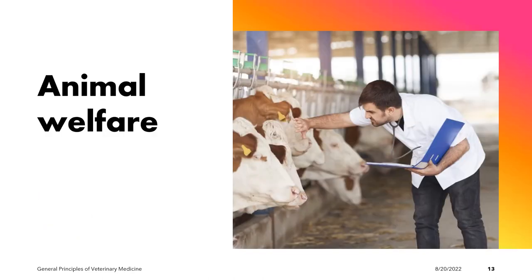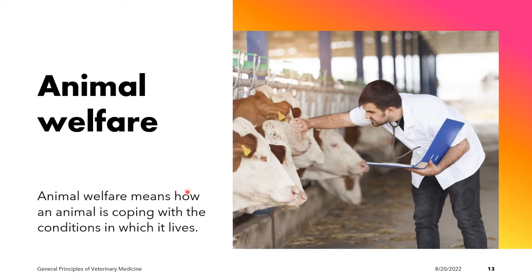The next objective of food producing animal practice is animal welfare. According to the American Veterinary Medical Association, animal welfare means how an animal is coping with the conditions in which it lives. An animal is in good welfare if it is healthy, comfortable, well nourished, safe, able to express innate behavior, and not suffering from unpleasant states such as pain, fear, and distress.